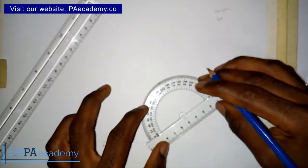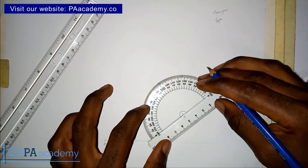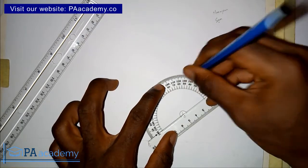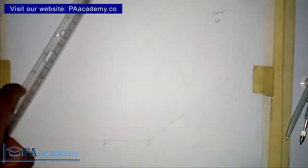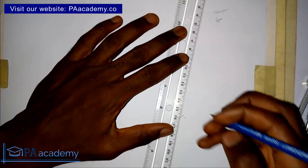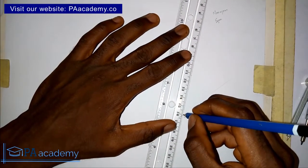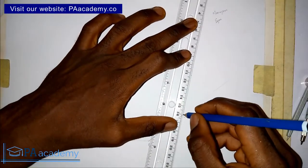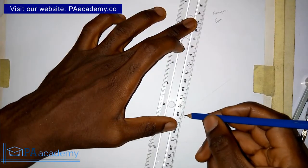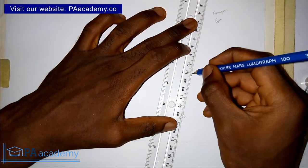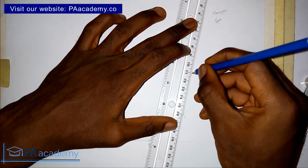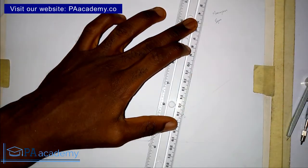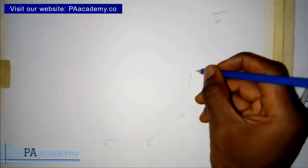I'll bring back the protractor and place it on point C, then measure another 40 degrees and mark it. From point C to where we have the 40-degree mark, I draw a line and measure five centimeters — one, two, three, four, five. So this is going to be point D.